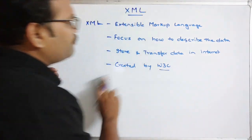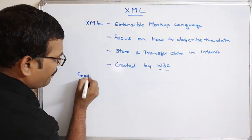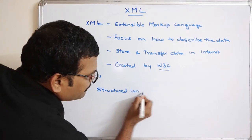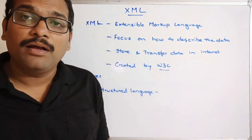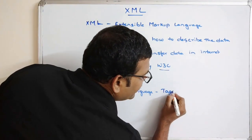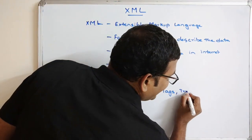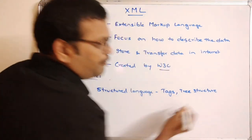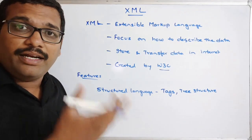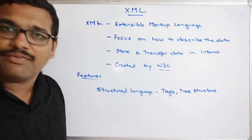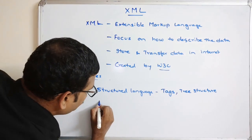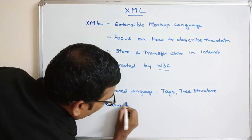The first feature of XML is that it is a structured language. We use tags to describe the data and it follows a tree structure, meaning it has root elements and child elements. It is also very easy to understand. Another feature is that it is platform independent, meaning XML applications can be executed on different operating systems.